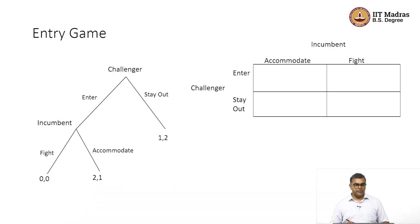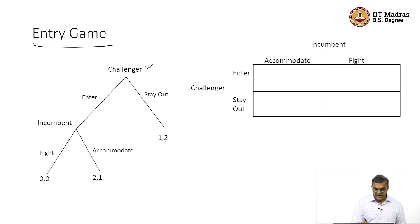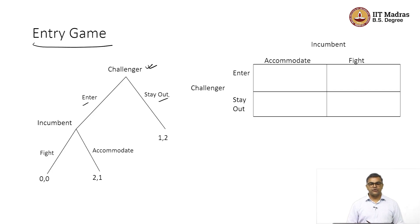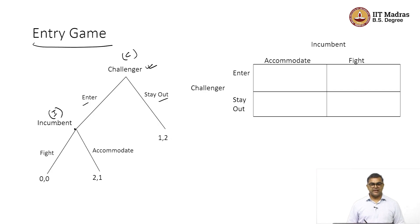Just to refresh your memory, we are taking an entry game. There is a challenger deciding to enter the market or stay out, and there is an incumbent. We can call the challenger C and the incumbent I. Once the challenger enters the market, the incumbent either fights or accommodates, and the payoffs are given.